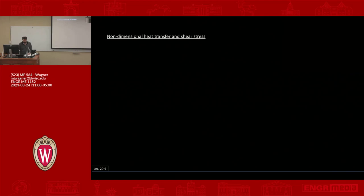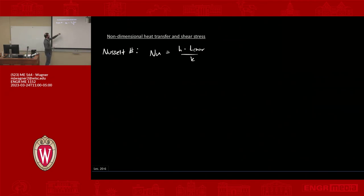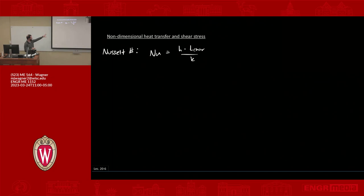The first non-dimensional parameter we're going to talk about is an energy parameter — the Nusselt number, often called Nu. It's defined as the heat transfer coefficient times some characteristic length divided by the conductivity. If you know the heat transfer coefficient, the fluid property conductivity, and the characteristic length, you can compute this non-dimensional parameter. The Nusselt number is a dimensionless measure of how effective heat transfer is in a convective situation, since it combines a fluid property, a length scale, and h, which is power per unit area per unit degree.